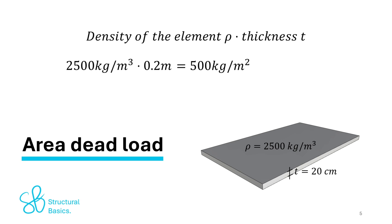So 500 kg per square meter are roughly 5 kilonewton per square meter, which we then apply to the concrete slab.